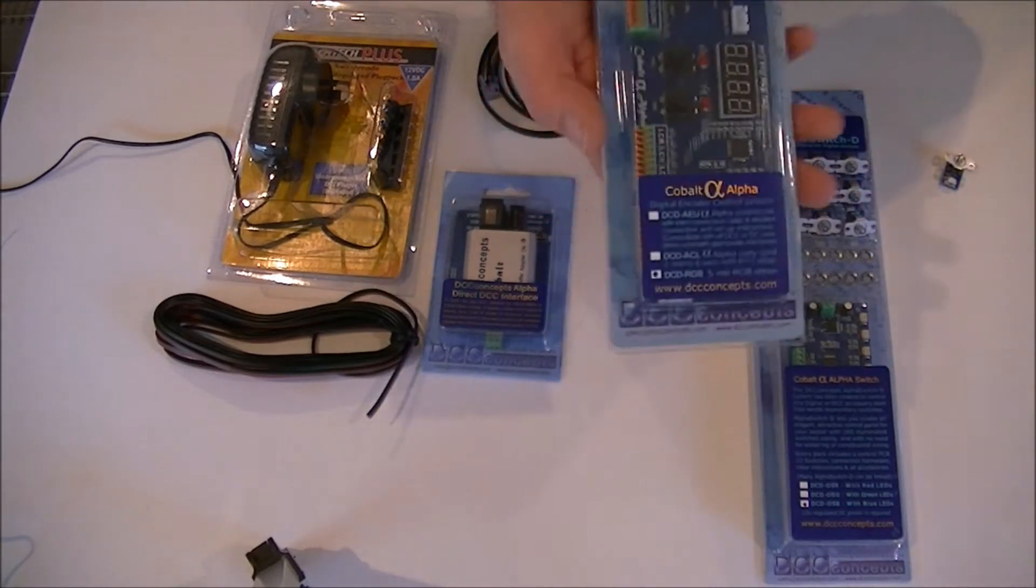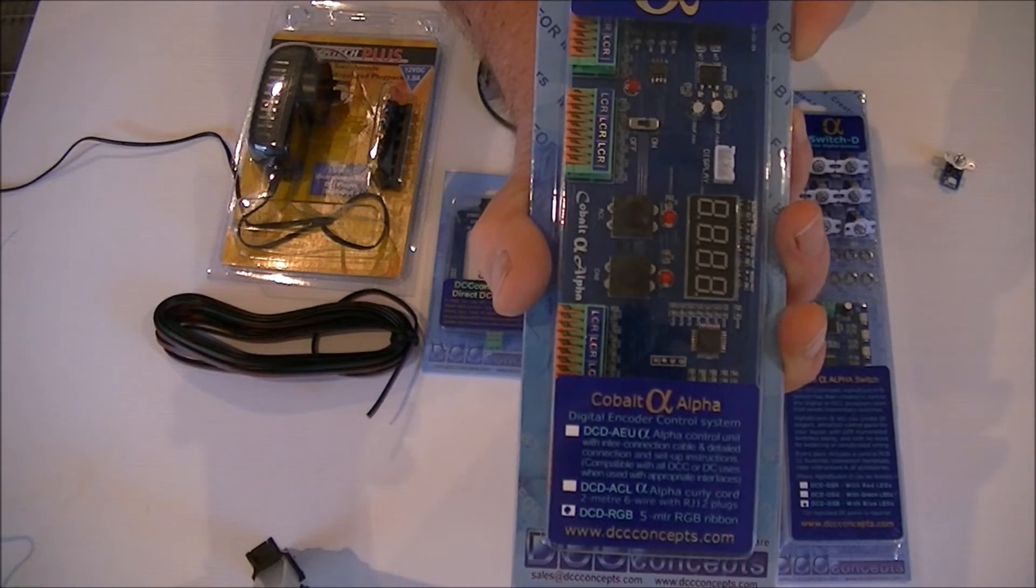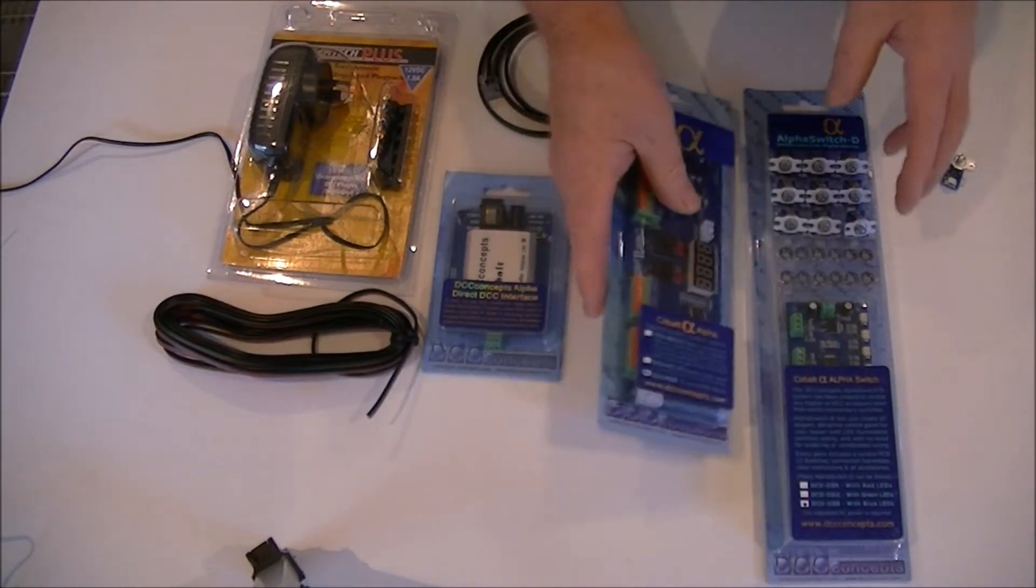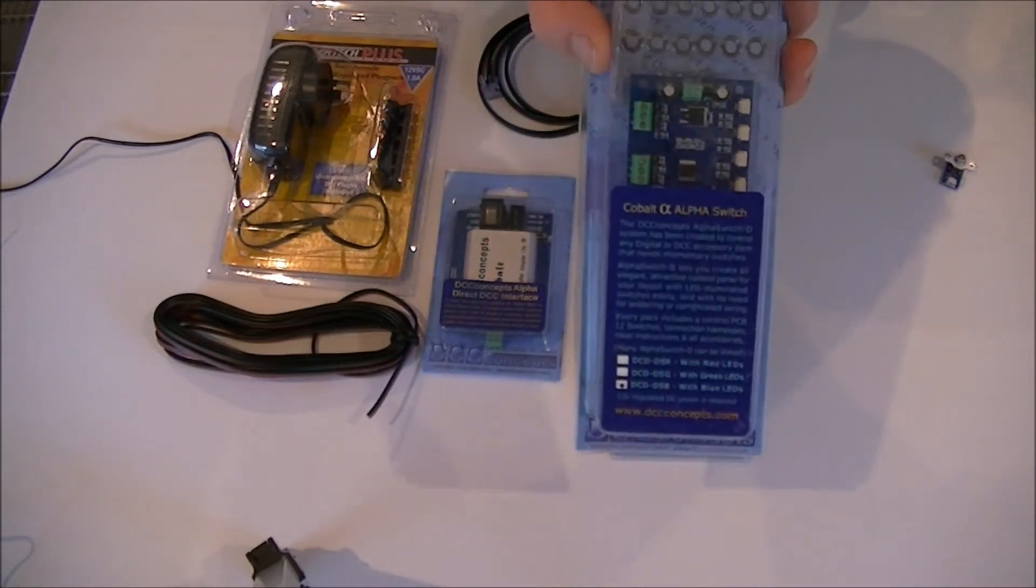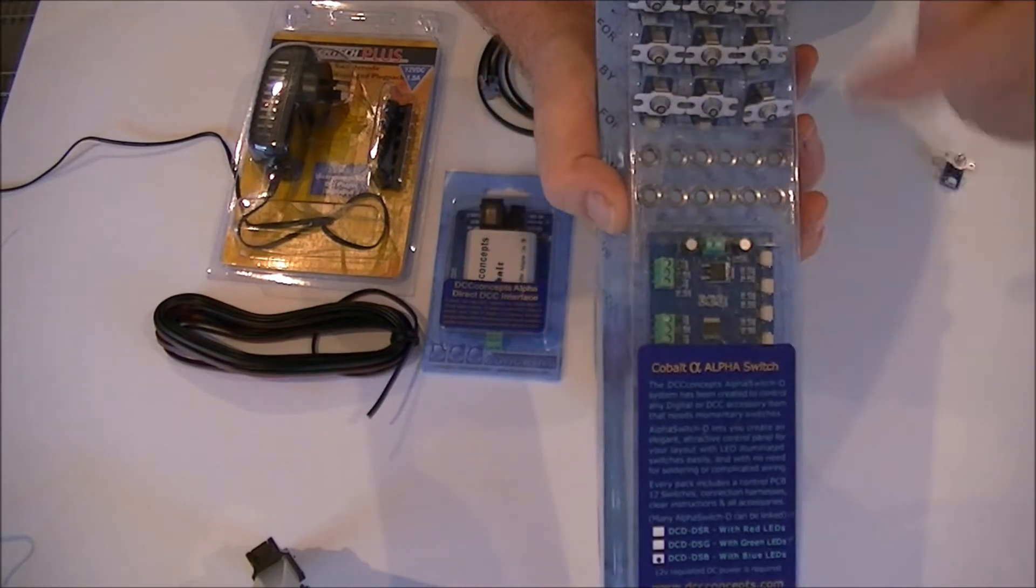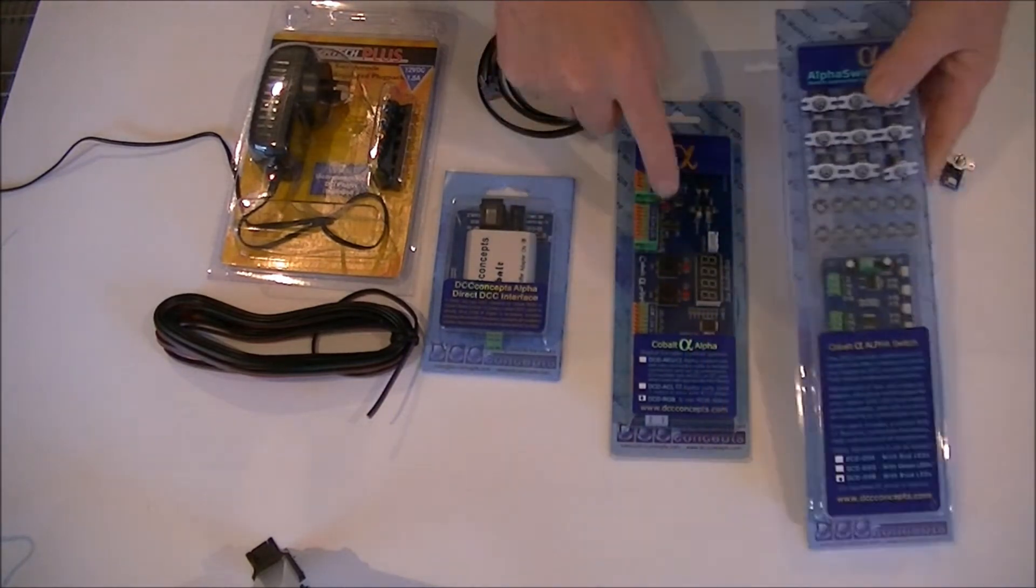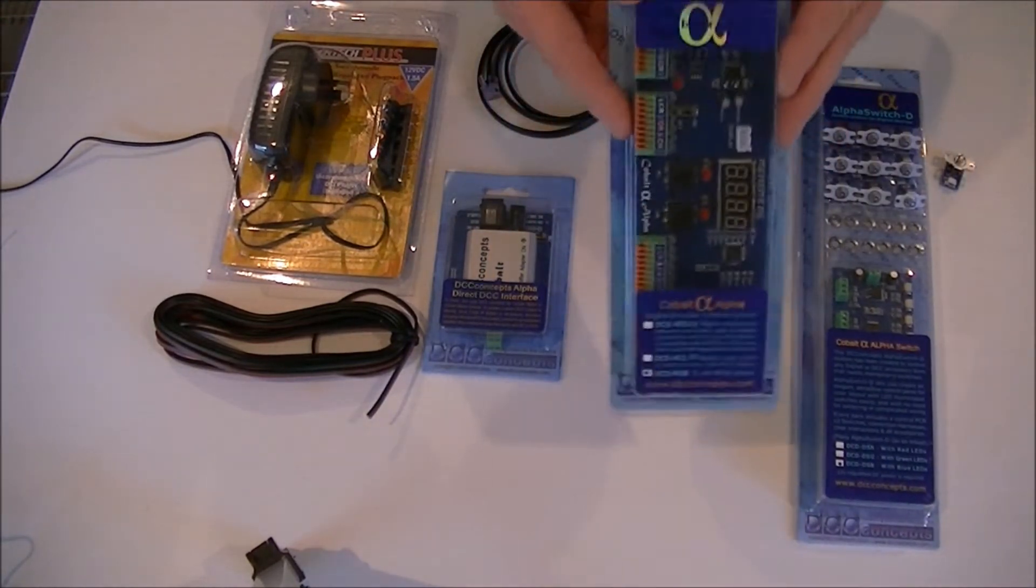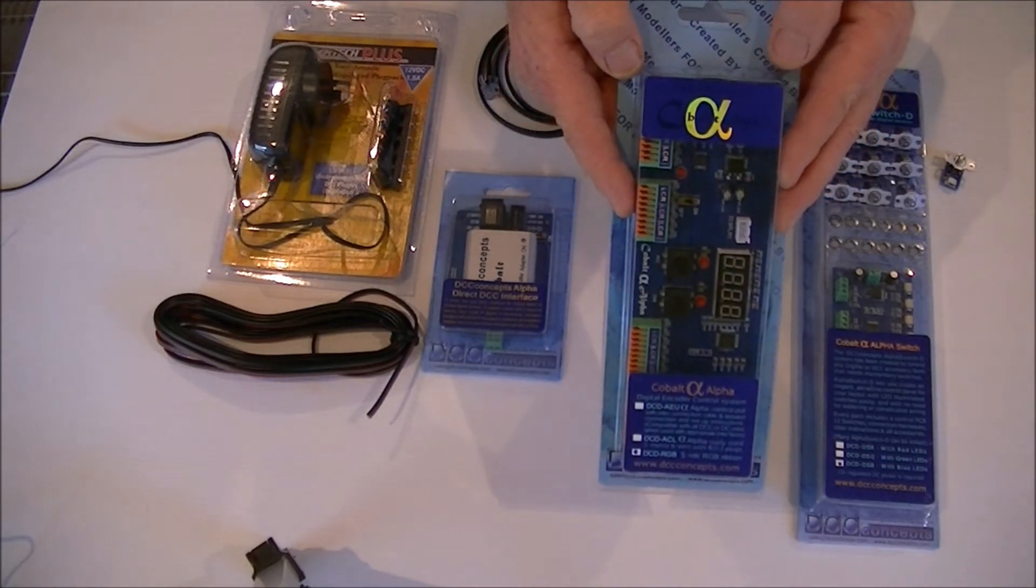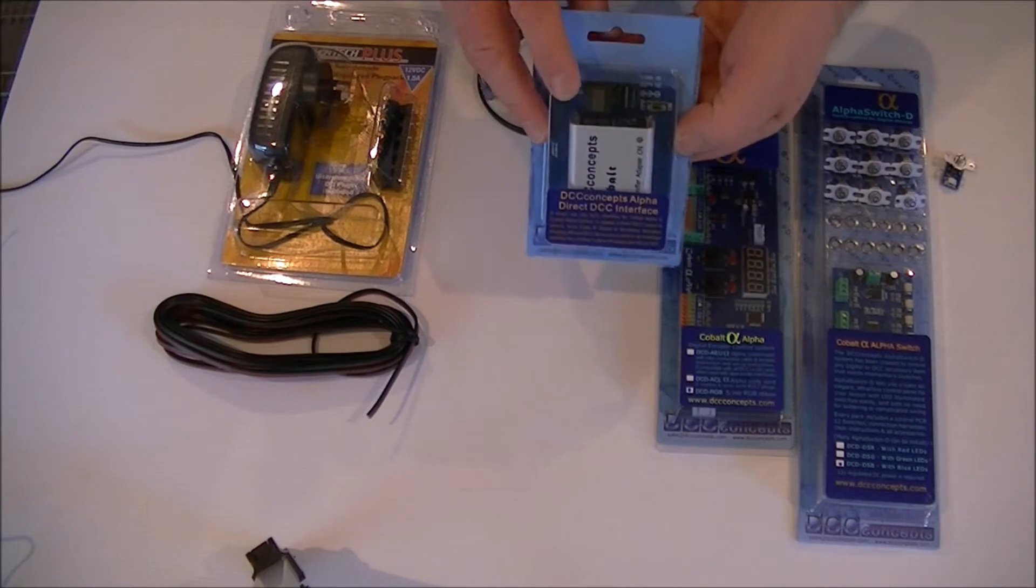What's the encoder? Okay, this here is the Cobalt Alpha encoder. What this does, this takes the signal from your Cobalt Alpha switch here, just a little circuit board. That wires into there, so it takes the signal from the switch, converts it to a DCC encoded signal.